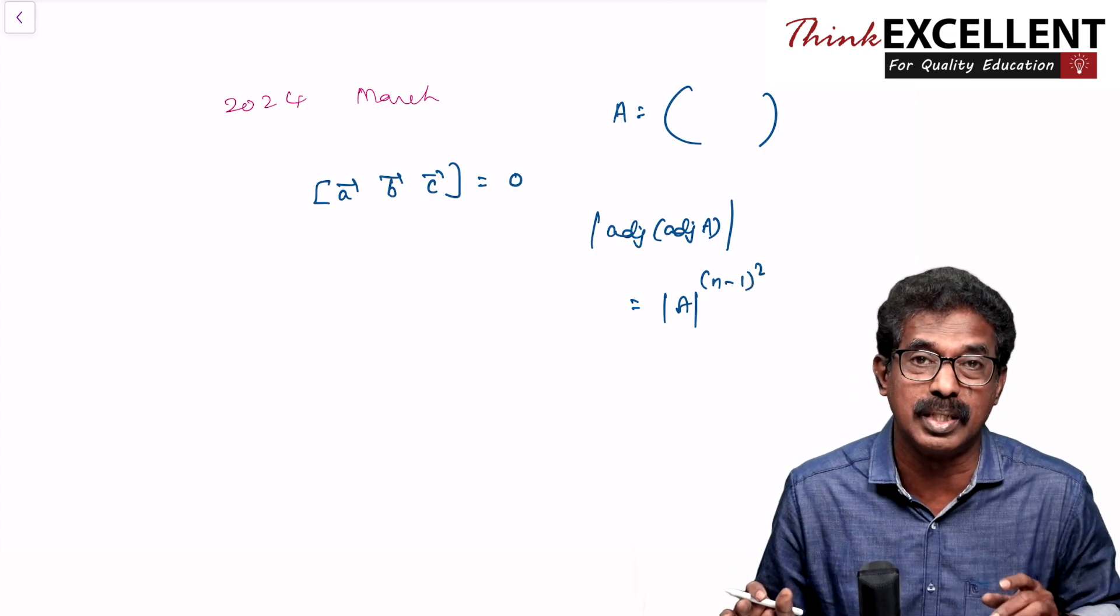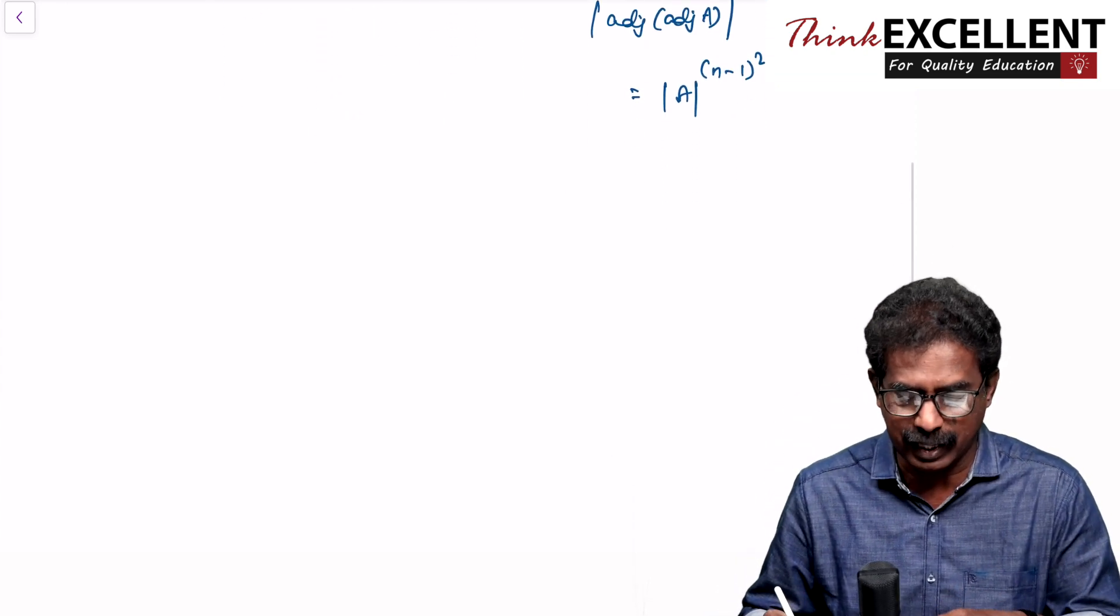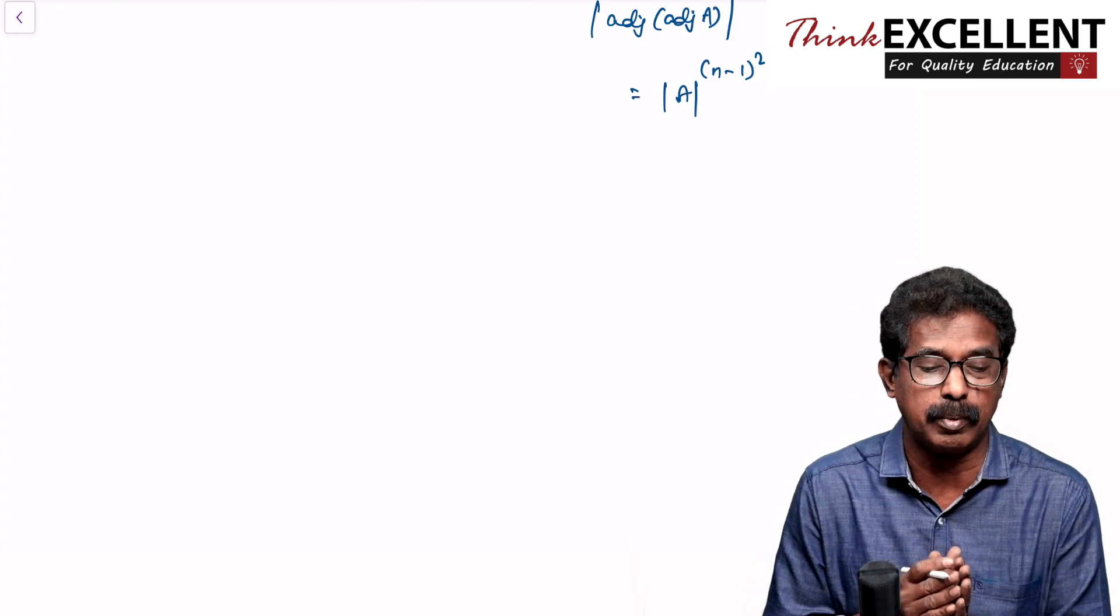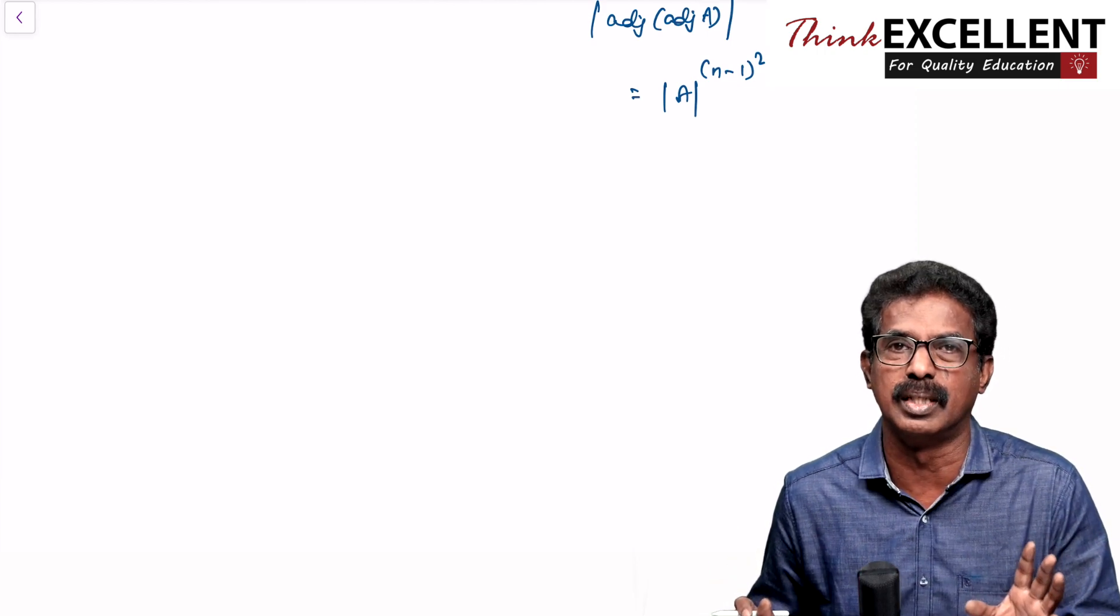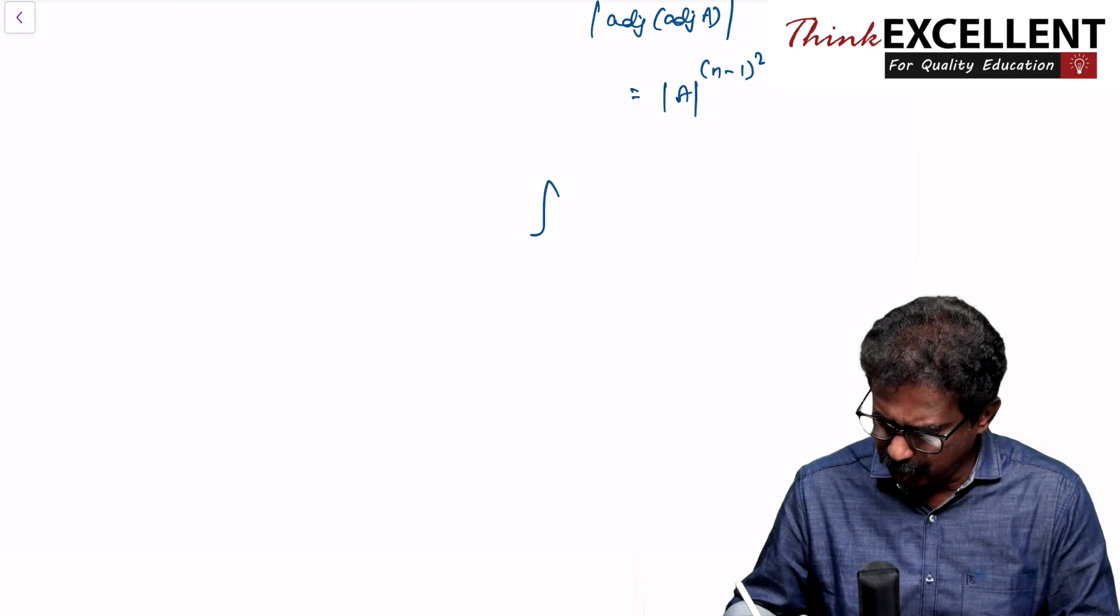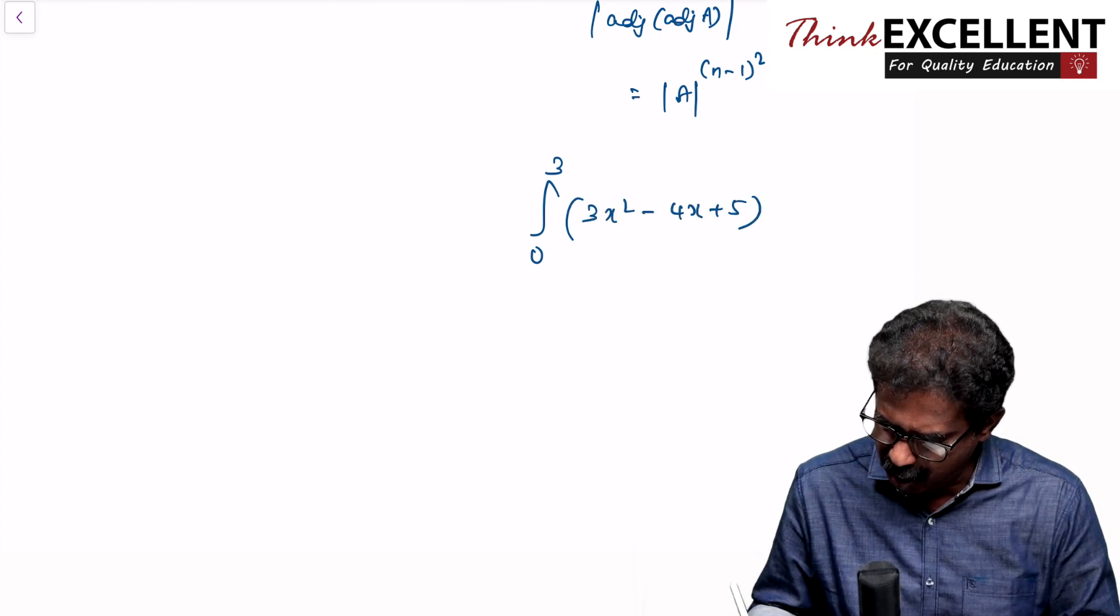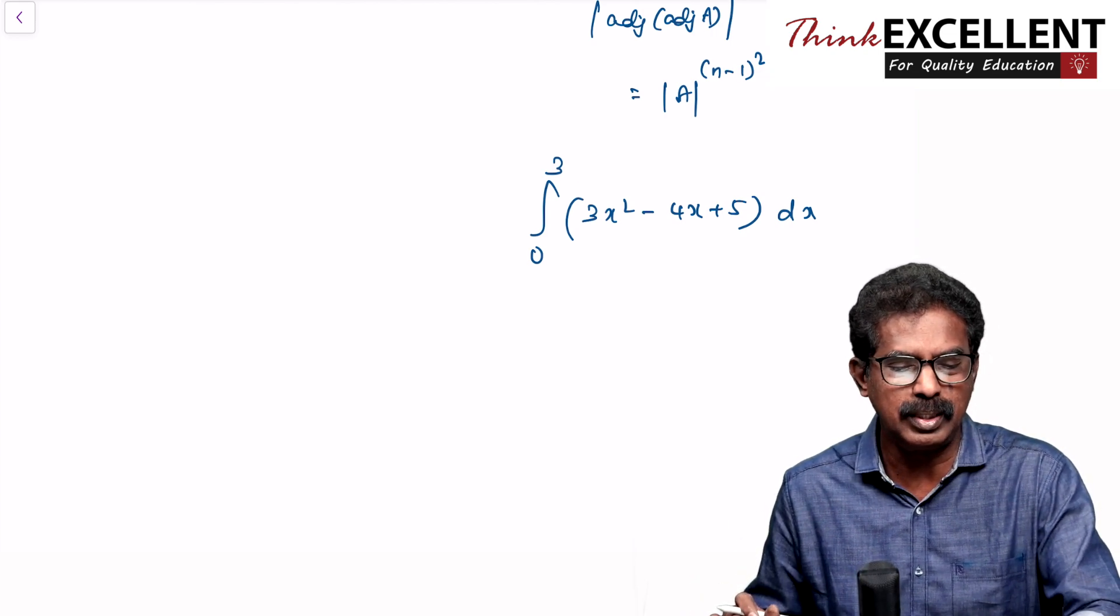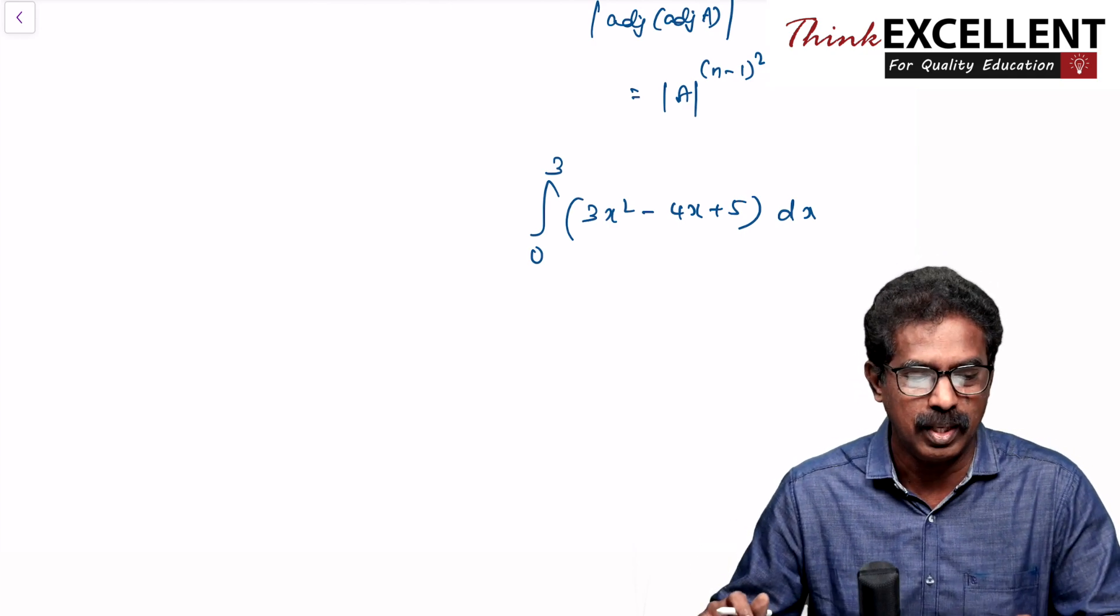These are the two compulsory questions asked last year 2024 March. 2024 June, vector algebra one question: volume of the parallelepiped is 90 cubic units, find lambda. So two mark is very simple question. Three mark is very simple integration, direct question. Integral 0 to 3, 3x squared minus 4x plus 5 dx. Easily you can do, very basic integration. Based upon that, 2024 exam students are happy, compulsory question easy. They find it difficult at the same time.